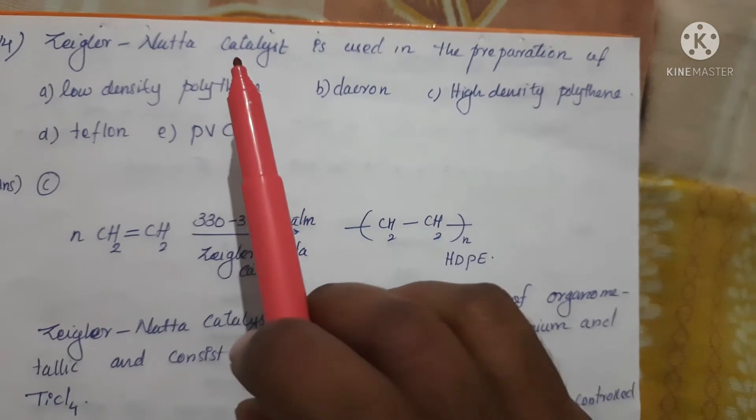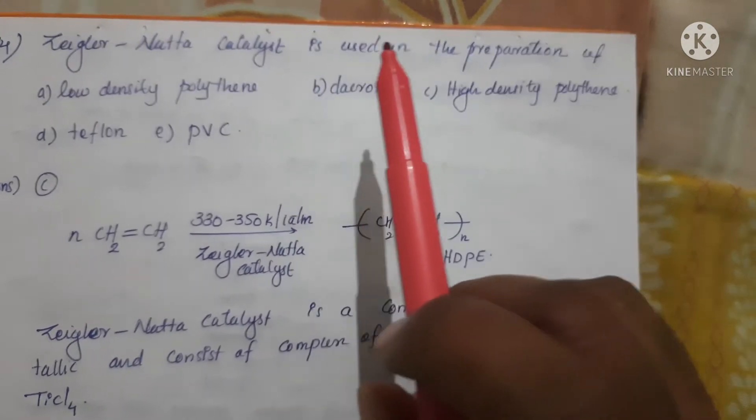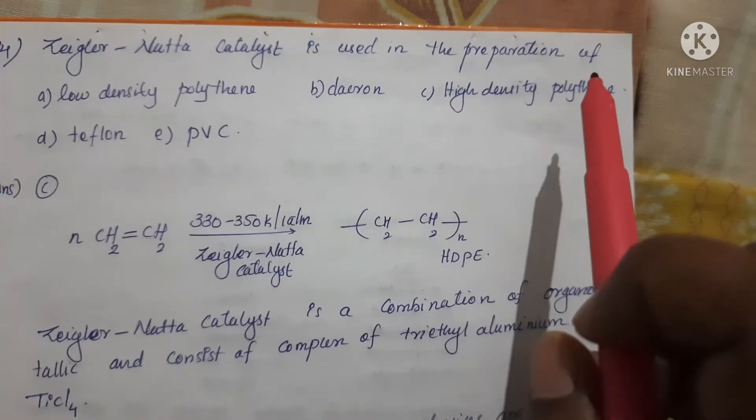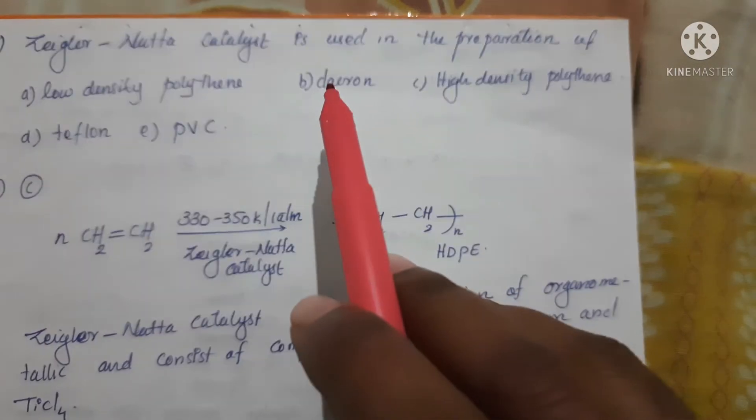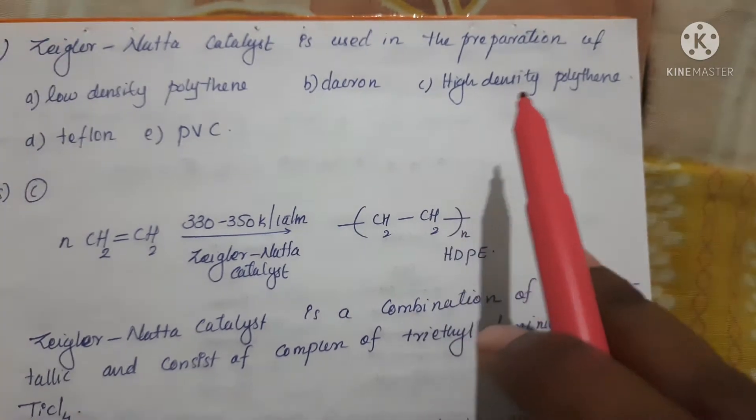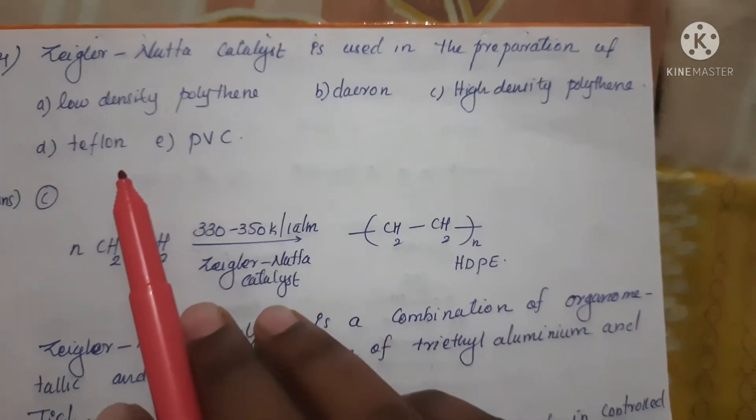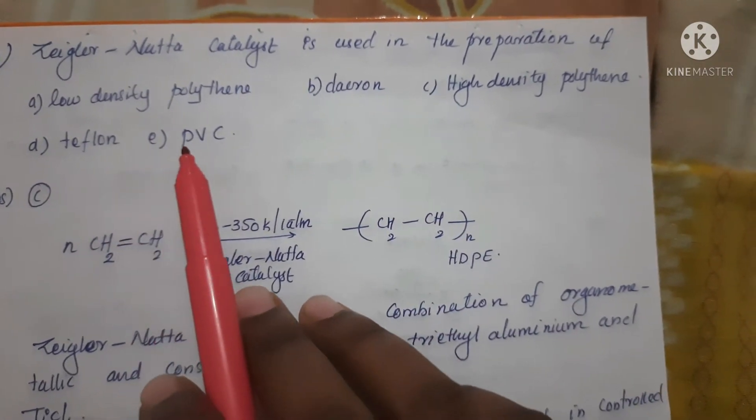Next question: Ziegler-Natta catalyst is used in the preparation of - Option A: low-density polyethene, Option B: Dacron, Option C: high-quality polyethene, Option D: teflon, and Option E: PVC.